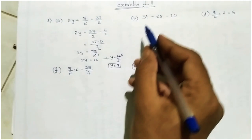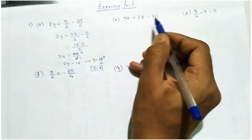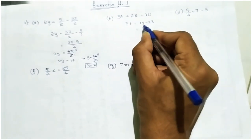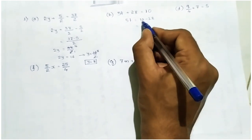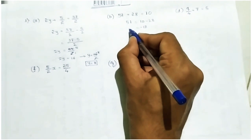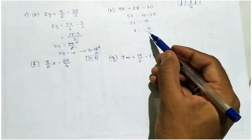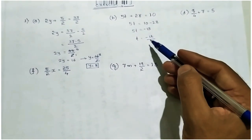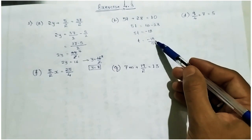Taking B: 5t plus 28 equal to 10. Take 28 to the right side — it becomes 10 minus 28. Since you can't subtract 28 from 10, do 28 minus 10 which gives 18, with the bigger sign being minus, so 5t equal to minus 18. Then t equal to minus 18 divided by 5. Since 18 and 5 are not in the same tables, keep it as t equal to minus 18 by 5.